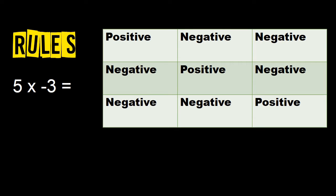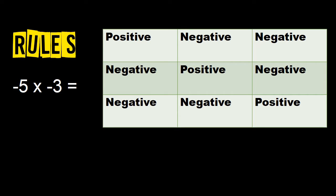What about a positive times a negative? We start in the top left corner, and positive times a negative gives us a negative number. So 5 times negative 3 gives us negative 15. What about a negative times a negative? That pattern gives us a positive number, so negative 5 times negative 3 gives us positive 15.